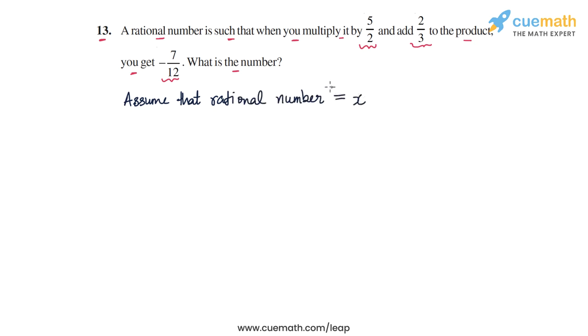Now what are we doing to x? We are first multiplying it by 5/2 and then we are adding 2/3 to the product. So first we are multiplying x by 5/2. So we will get 5/2 times x and to this product we are then adding 2/3.